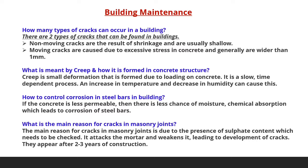The first question is: how many types of cracks can occur in a building? This is a major issue in maintenance. There are two types of cracks. First, non-moving cracks are the result of shrinkage and are usually shallow. Second, moving cracks are caused due to excessive stress in concrete and are generally wider than 1 mm.